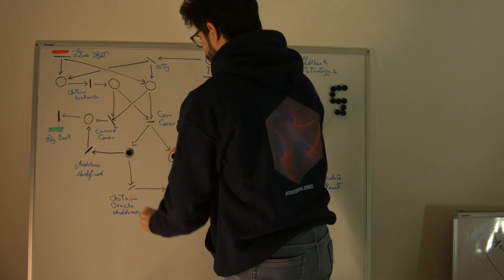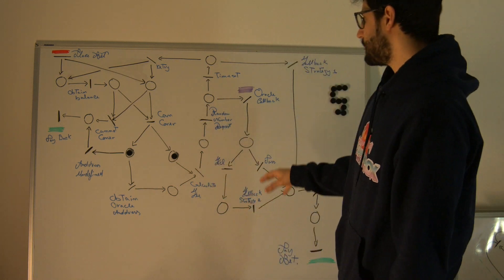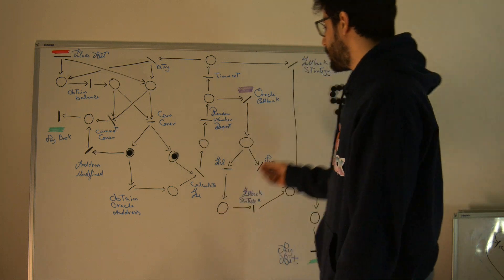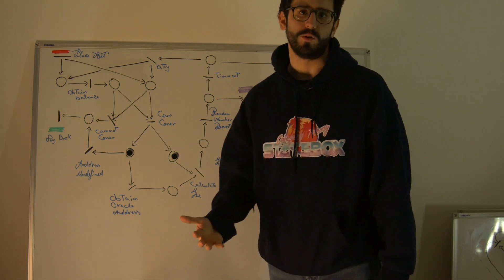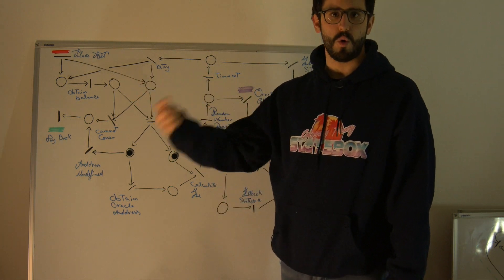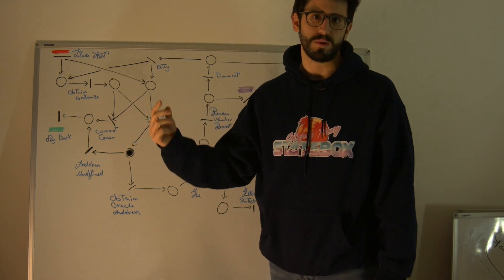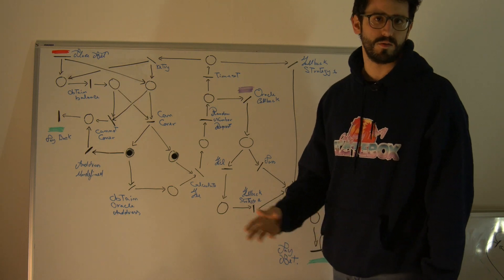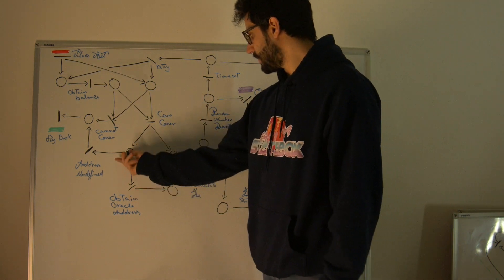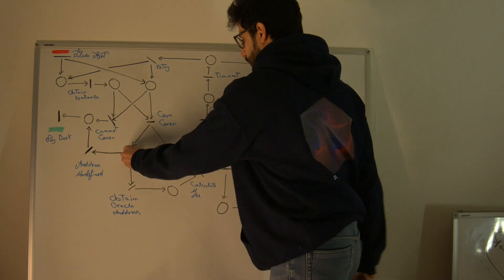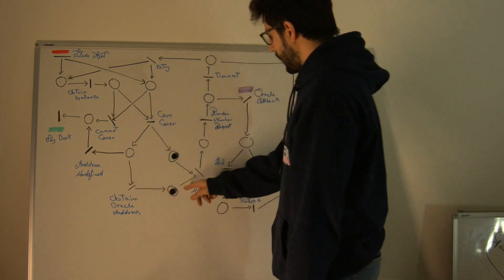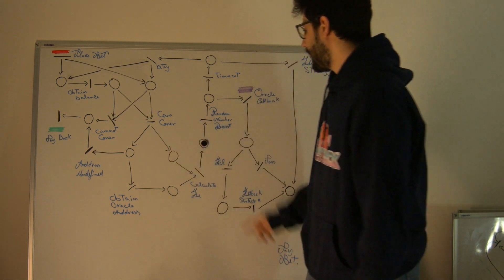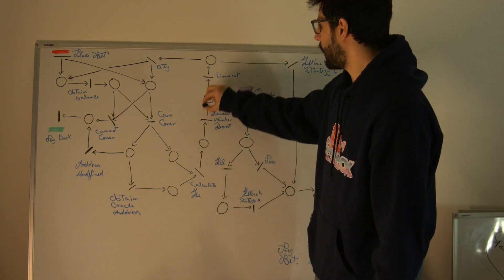In this case we can cover the bet. Now we need to generate a random number. To do this we will use an Oracle, which is basically another contract that you call and it calls you back once the random number is calculated. There are many services already online on Ethereum that do this. So we need to obtain the Oracle address we have in memory, calculate the fee that we have to pay to the Oracle contract to get the random number, and then send the random number request.